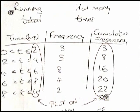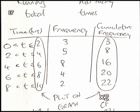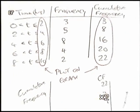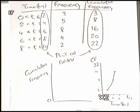When you've got your cumulative frequency table drawn, you plot your graph. Cumulative frequency always goes up the side, and your measurements always go along the bottom.